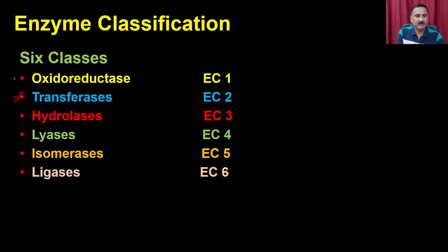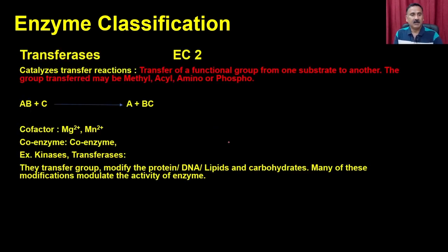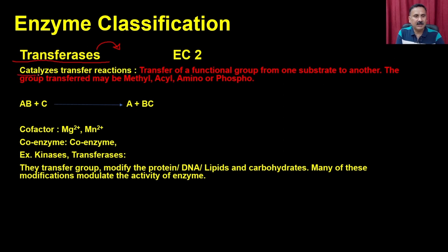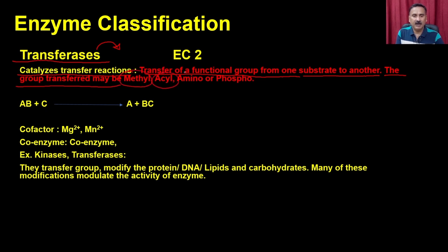The next class is the transferases, belonging to EC2. As the name suggests, transferases transfer a group from one substrate molecule to another. They catalyze transfer reactions — the transfer of a functional group from one substrate to another. The groups that can be transferred include methyl groups, acyl groups, amino groups, or phospho groups.